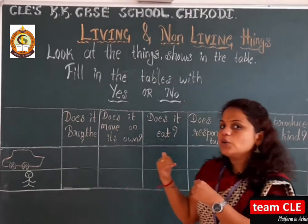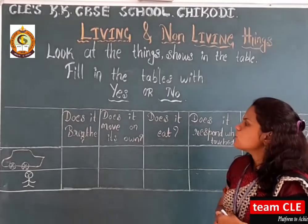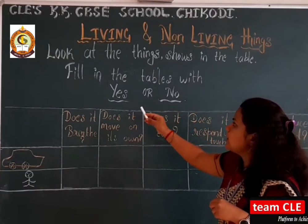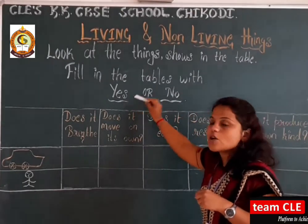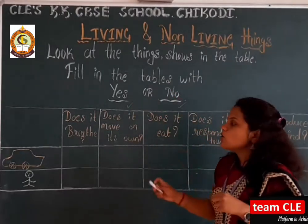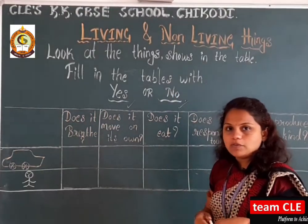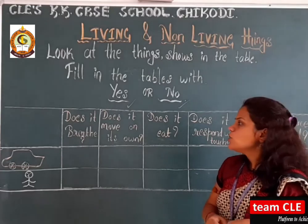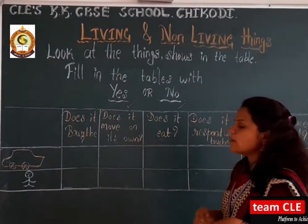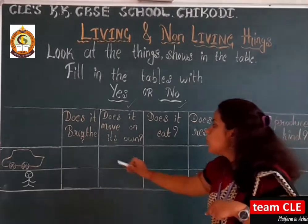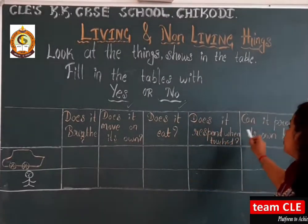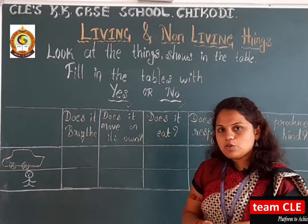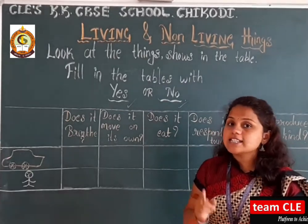So dear students, what you can see behind me? This is one portion where you get the things shown in a table — fill in the table with yes or no. In this table you have to write whether the answer is yes or no. How many questions are there? Totally 5 questions. In these 5 questions you have to answer as yes or no.